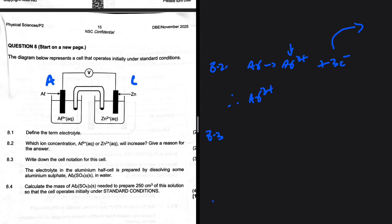Write down the cell notation for this cell. So we know that this is the oxidation half reaction. And then the reduction half reaction is Zn²⁺ plus 2 electrons giving us zinc. So salt bridge.